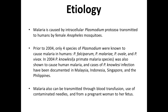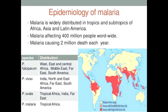Etiology. Malaria is caused by intracellular plasmodium protozoa transmitted to humans by the female Anopheles mosquito. So the causative agent is plasmodium, which is a protozoa, and the Anopheles mosquito is the vector. Malaria can also be transmitted through blood transfusion, use of contaminated needles, and from a pregnant woman to her fetus.